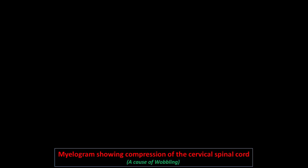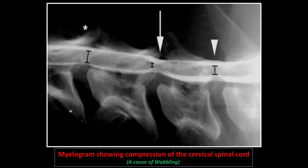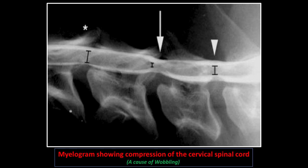This myelogram shows compression of the cervical spinal cord in wobbler disease. Due to dorsal subluxation of the cervical vertebra, there is pinching of the spinal cord, and the size of the spinal cord decreases as compared to the other sides. This is a clear case of wobbler syndrome, with definite incoordination signs due to compression.